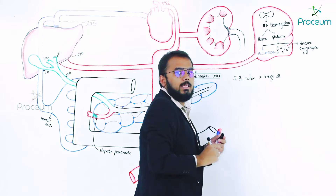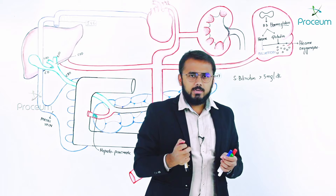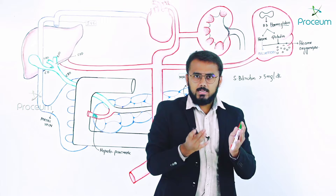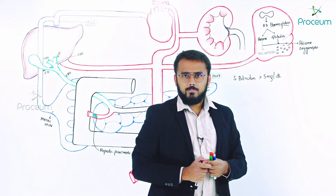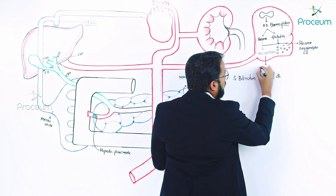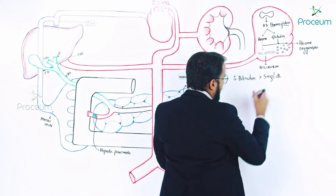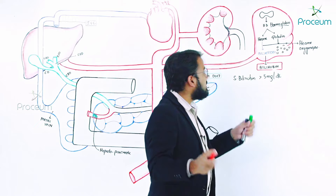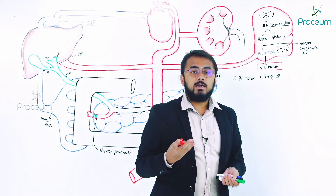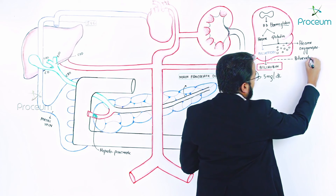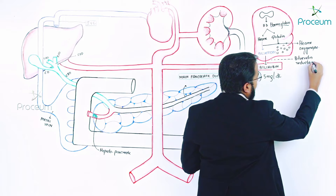Biliverdin is a tetrapyrrolic structure and is basically green in color — it imparts the green color to bile. This biliverdin will further break down into the actual compound called bilirubin, with the help of an enzyme called biliverdin reductase.